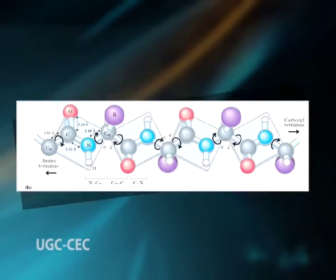Rotation is permitted about the N–C-alpha and the C-alpha–C bonds. The backbone of a polypeptide chain can thus be pictured as a series of rigid planes separated by substituted methylene groups or CHR, sharing a common point of rotation at C-alpha. The rigid peptide bonds limit the range of conformations that can be assumed by a polypeptide chain.